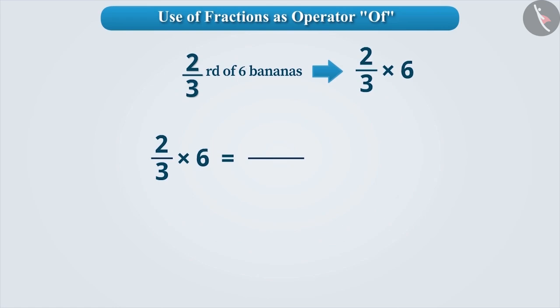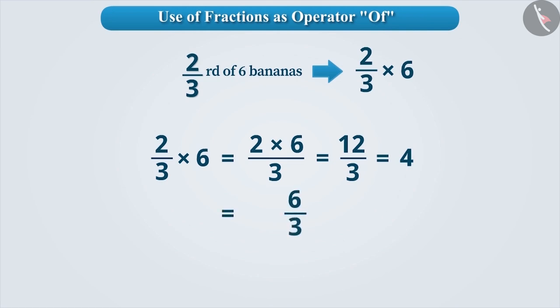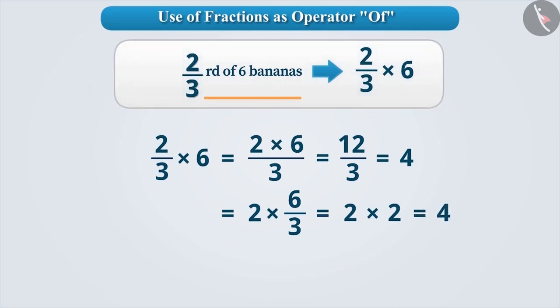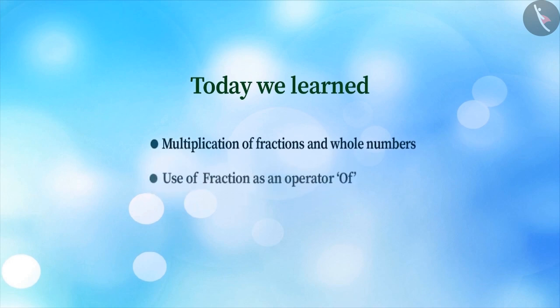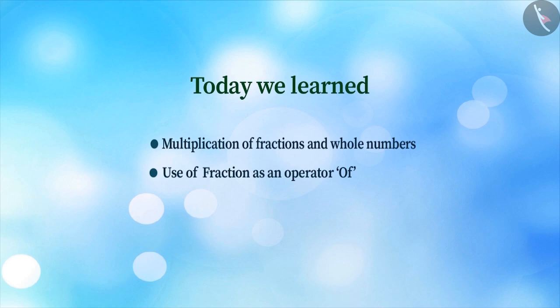One way to solve this is to first multiply the numerator 2 by 6 and then divide the result 12 by 3, giving us 4. Another method is to first divide 6 by the denominator 3 and then multiply the result 2 by the numerator 2, which also gives 4. Thus, fractions are used in the form of operator of. Today, we have learnt multiplication of fractions and whole numbers, and the use of fraction as an operator of. In the next video, we will learn about multiplication of 2 fractions.